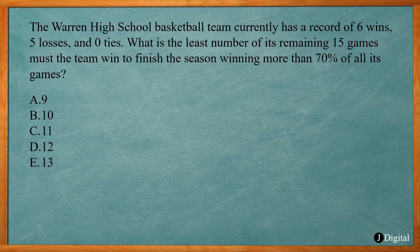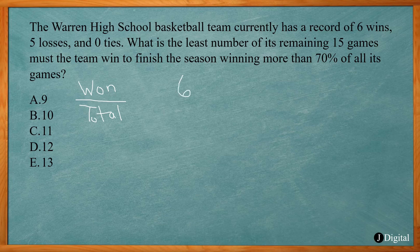The basic formula we're going to use for all these problems is how many games they won divided by the total number of games they played. The key here is to come up with the equation in order to solve for the unknown. So far we have six wins, and we want to know how many more wins they need — that's our unknown X. The total number of games they've played is 11 so far, and they have 15 more to go. We want that average to be at least 70%, or 0.7.